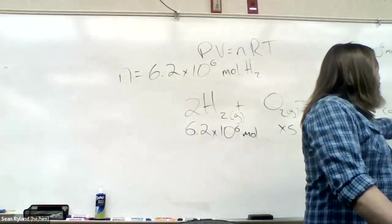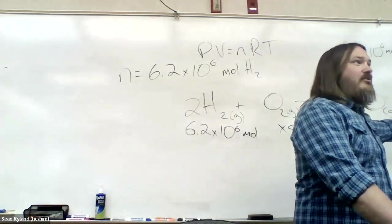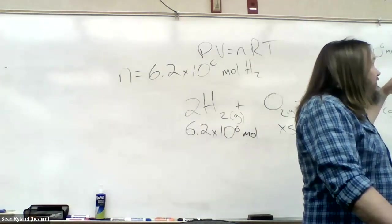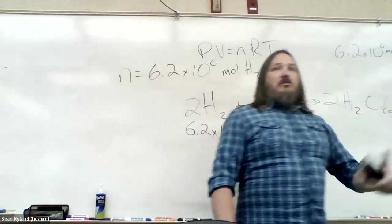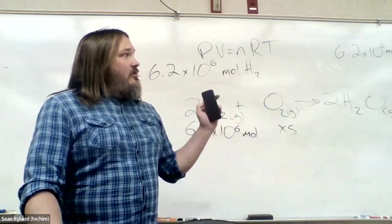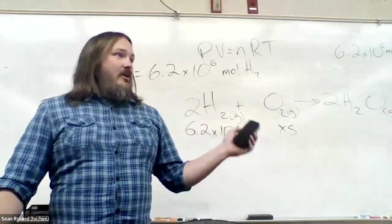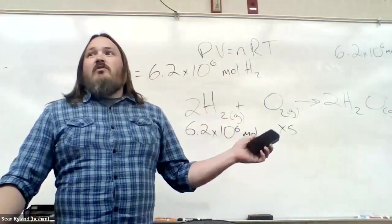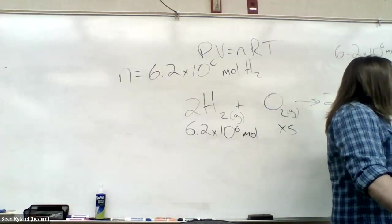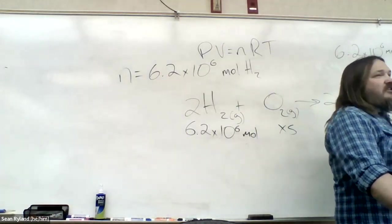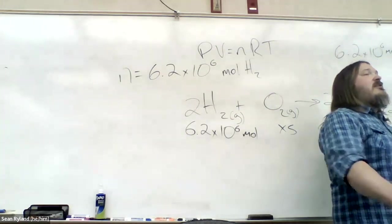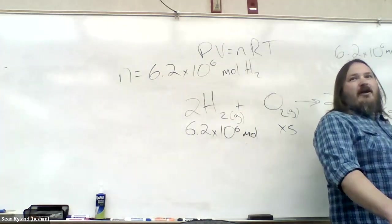But just for context, when we're dealing with numbers this big, it can be helpful to have something to compare it to. So this is 5 million cubic feet of hydrogen exploding, burning all at once. The smallest nuclear bomb ever used was about 15 kilotons of TNT, and that reaction produces about 1 times 10 to the 12 kilojoules for under 300 grams of fuel.